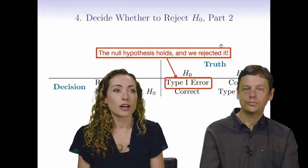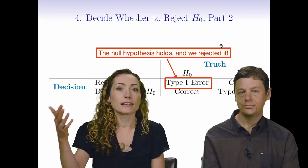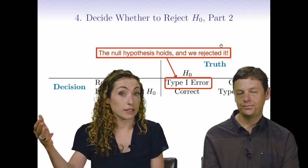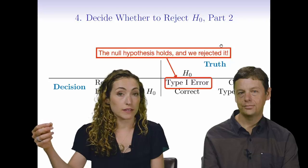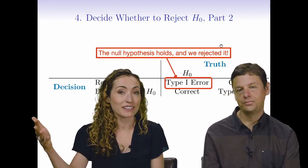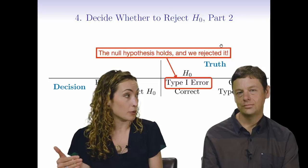It's sort of like if rejecting H0 is the headline in the newspaper that's like, vitamin C cures cancer. That's like, you've rejected H0. H0 is that vitamin C does not cure cancer. If the headline is that vitamin C cures cancer, somebody rejected H0. And we really, really, really want to make sure that they are right. We do not want that to be a type 1 error.